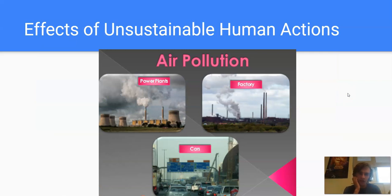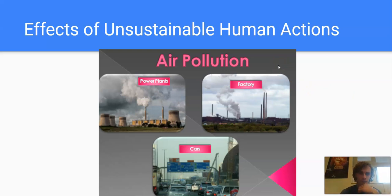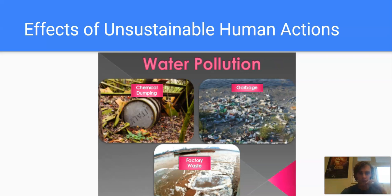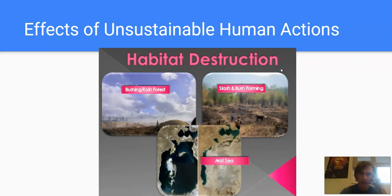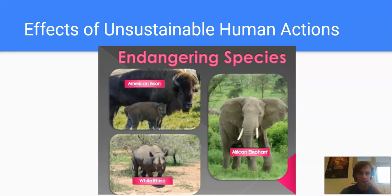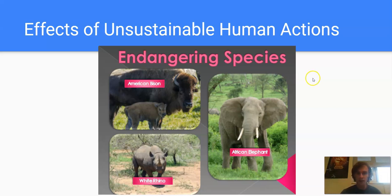If we aren't sustainable, we can have negative effects. Air pollution is an example of being unsustainable, as is water pollution, habitat destruction where we destroy animal habitats, and hunting species to the point of being endangered. All of those things are not sustainable — they're things that humans have done that are negative for the environment.